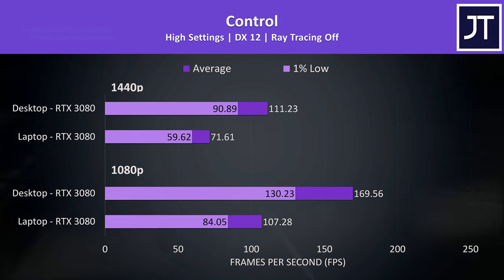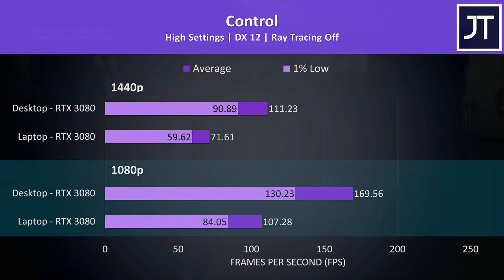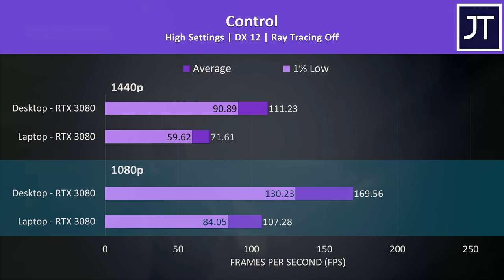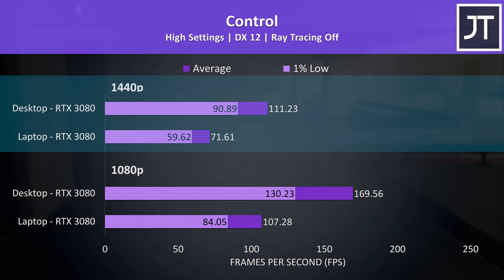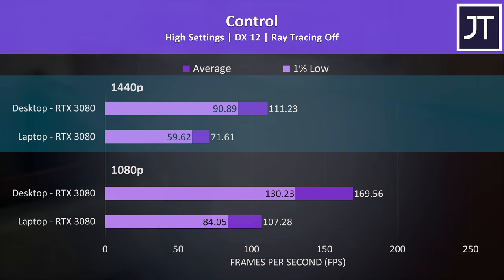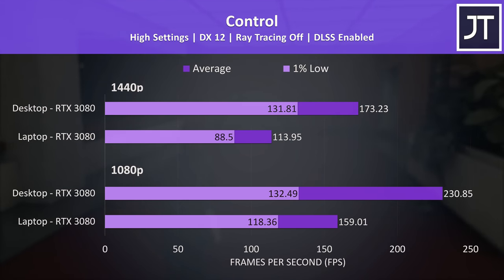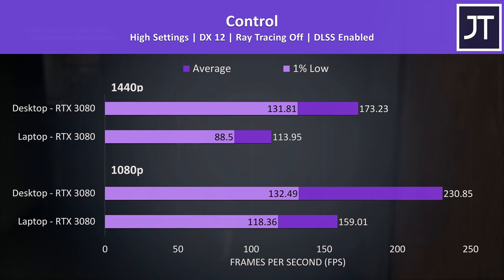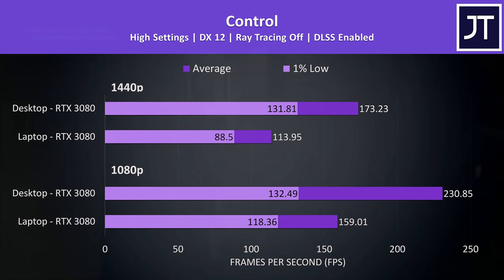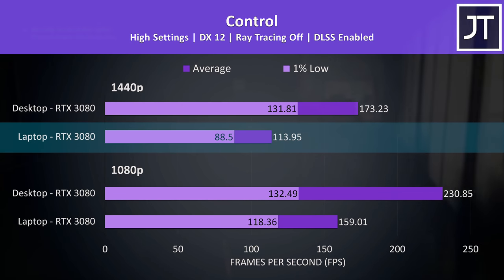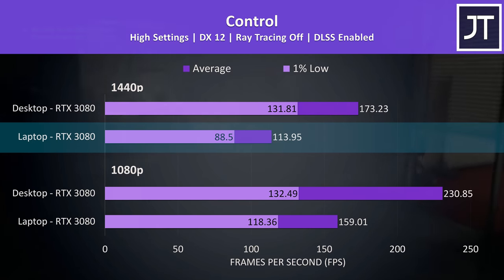Control is a fairly GPU-heavy game, which may explain why the difference at 1080p was the biggest out of all 17 games — a 58% higher average frame rate coming from the desktop system. There was still a well above average 55% lead by the desktop at 1440p. This game has a great implementation of DLSS and the performance boosts are quite large. The desktop 3080 is still quite far ahead, but above 100 FPS max settings at 1440p on the laptop is plenty for this sort of game.